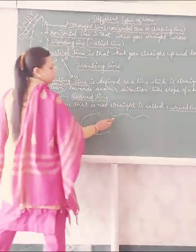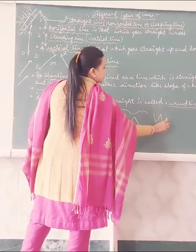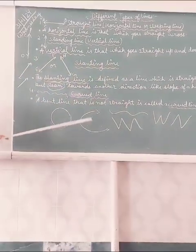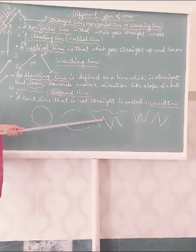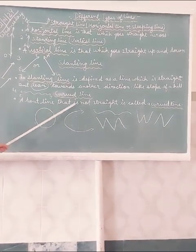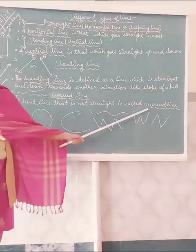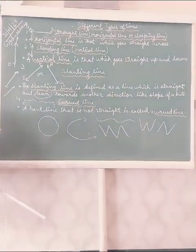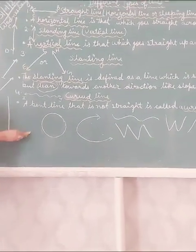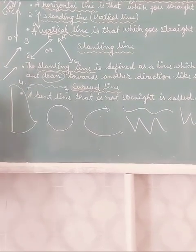These are also curved lines — this line, this line, and this one too. So these are all called curved lines. A bent line that is not straight is called a curved line. A straight line is like this; when the line is not straight, it is a curved line.